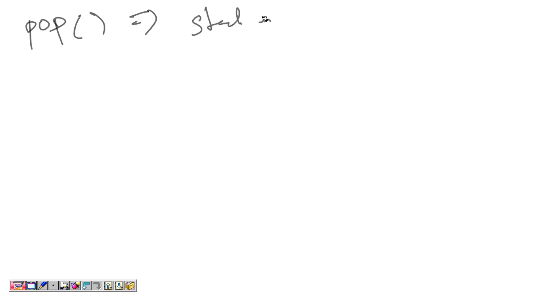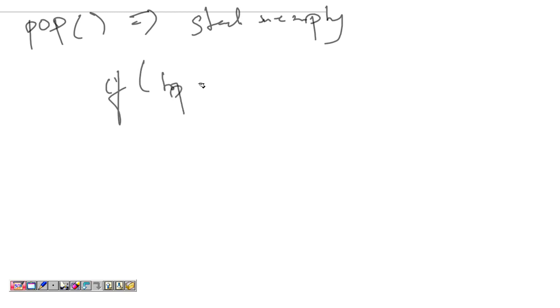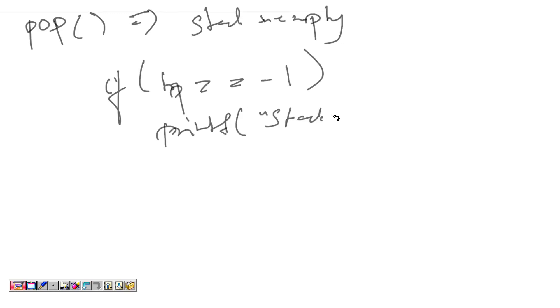If you want to implement pop, the minimum requirement you need to check is if the stack is empty. How can I check if the stack is empty? If top equals minus 1, I can give a message to the user saying that the stack is empty.